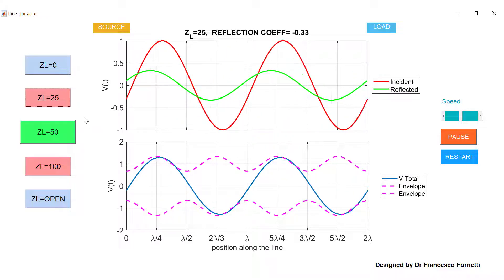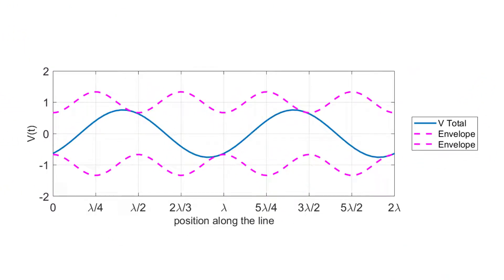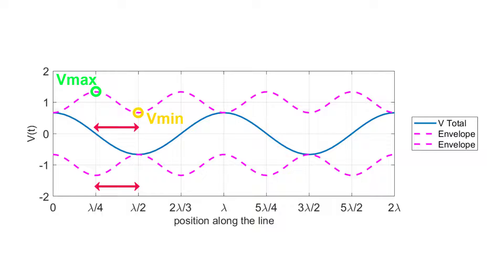It also gives us the envelope of this voltage waveform which, for an unmatched line, would be characterized by maxima and minima. From this we can see that if we are at a position where the envelope is at its peak, traveling a quarter of a wavelength down the line will take us to a position where it is at its minimum.